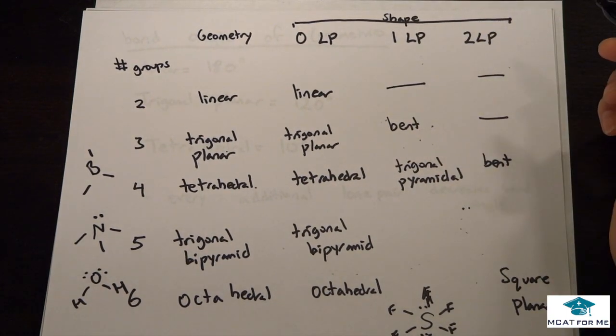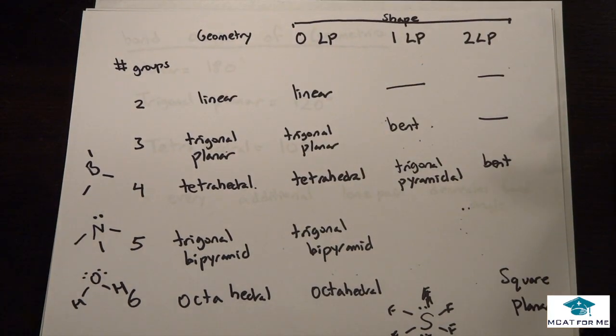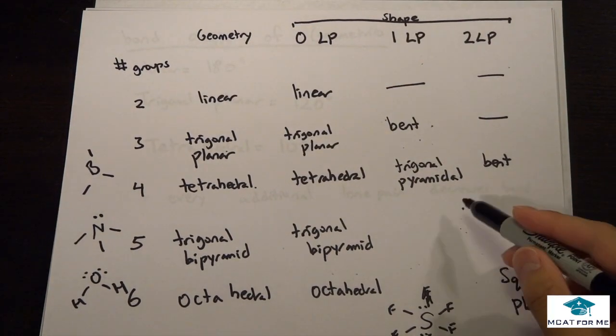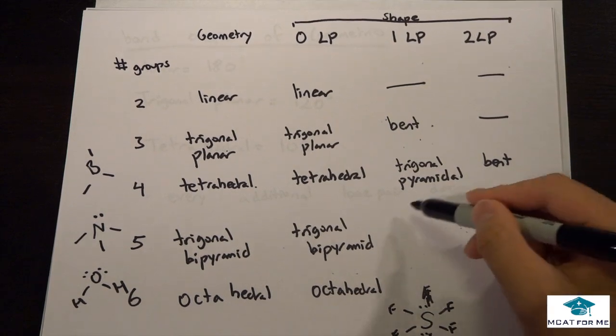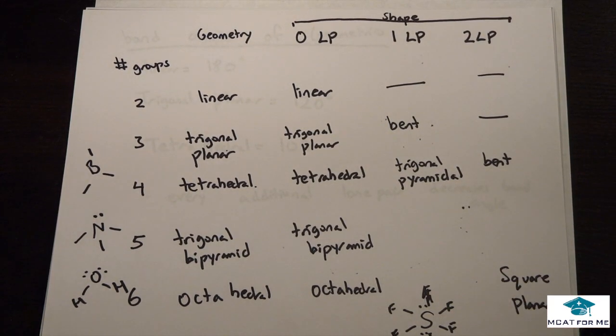That's why if there's a line through it, that means they don't exist, right? Because one lone pair with one bond would not be anything, just like these two as well.